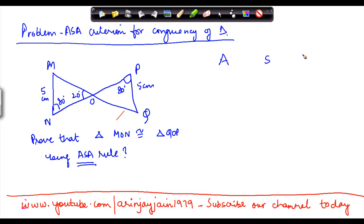Now under the A, S, A rule I need to have two angles and the common side between these two angles as equal.